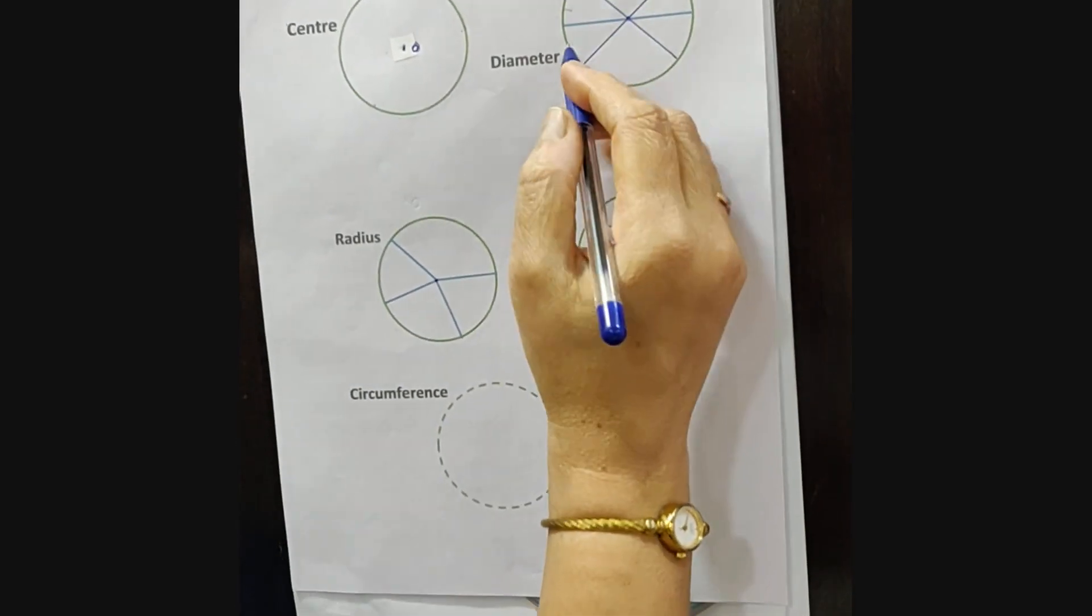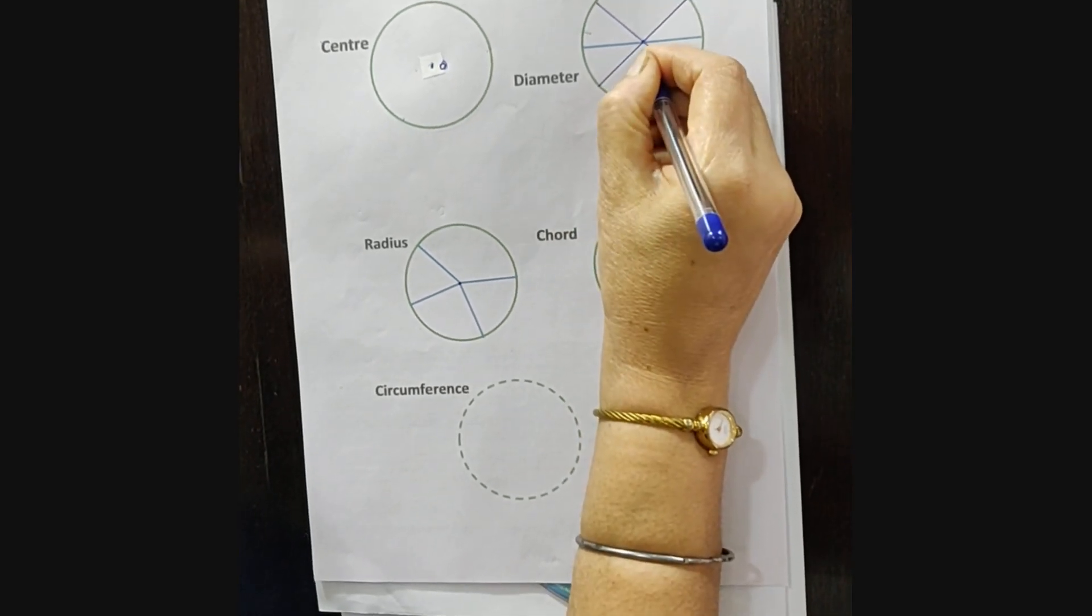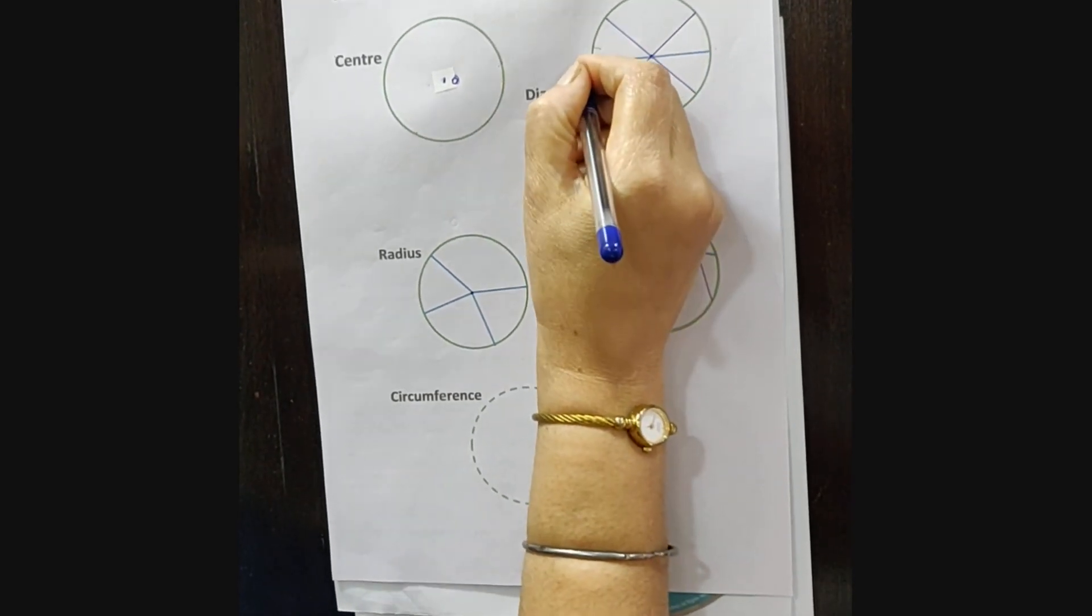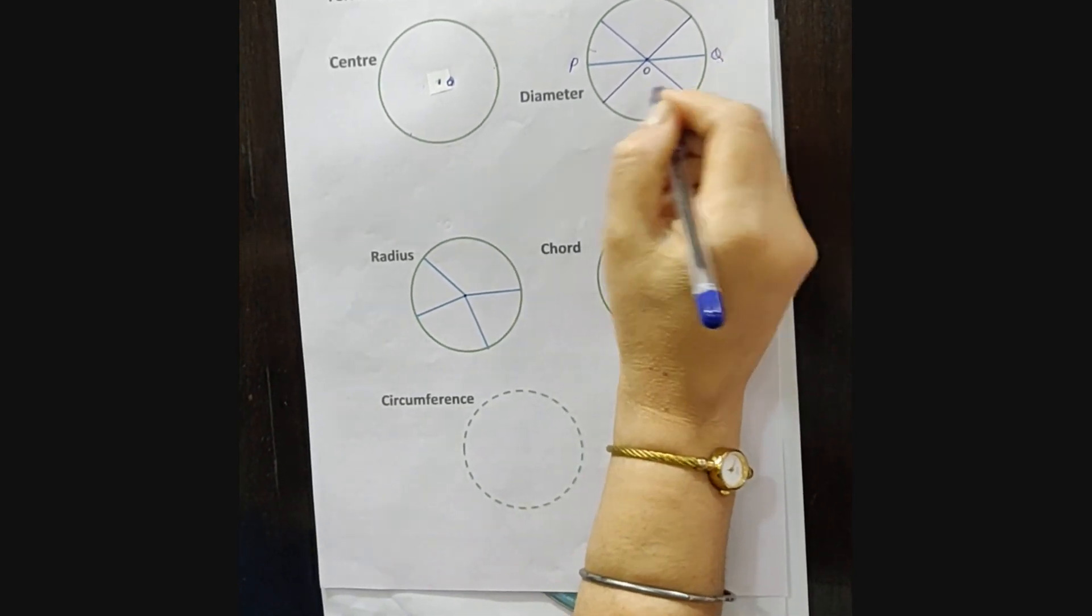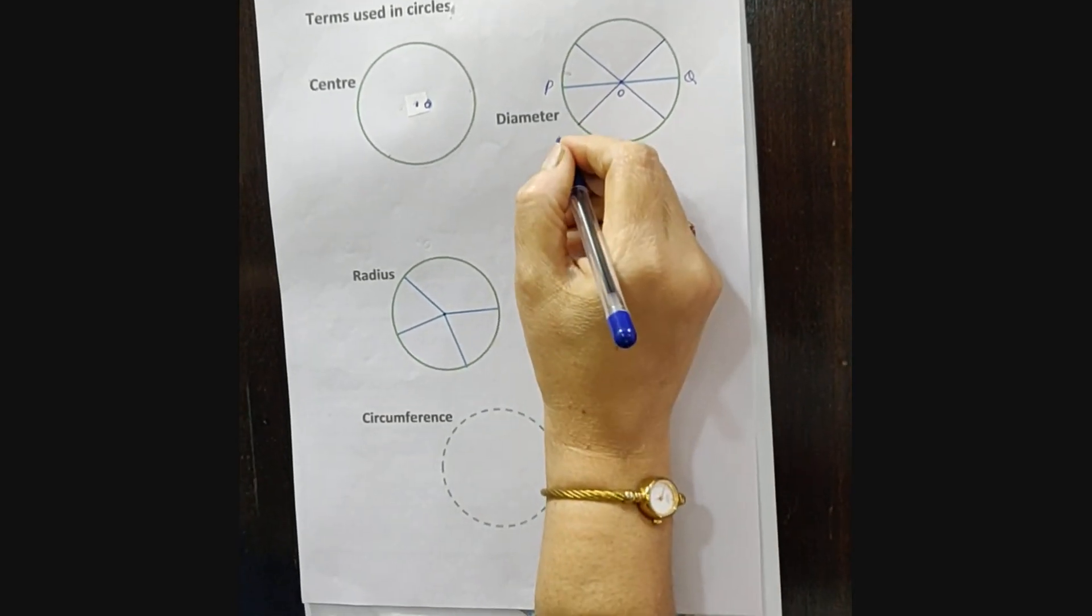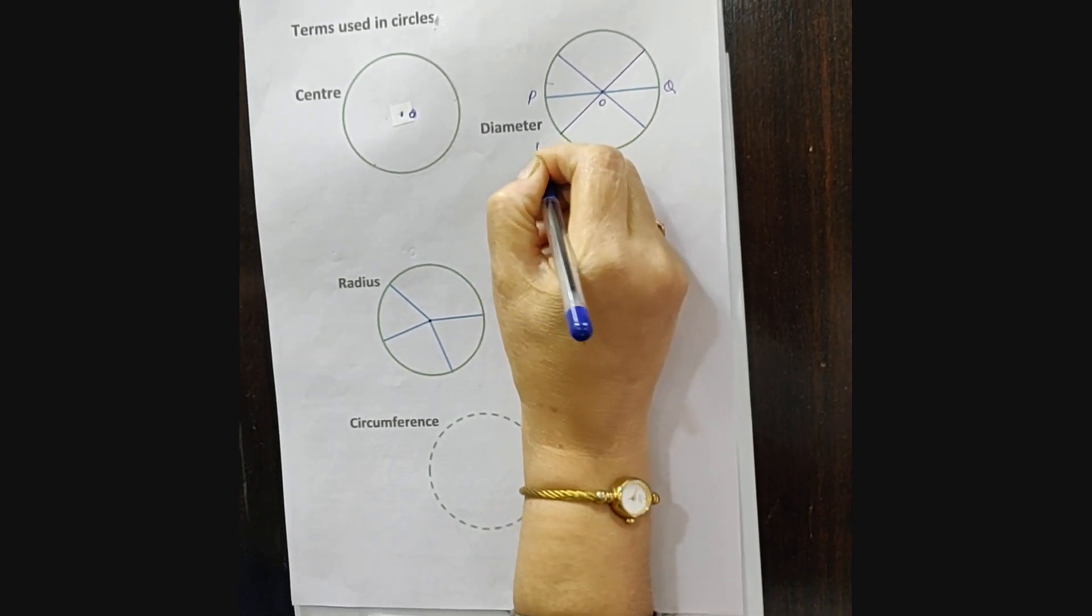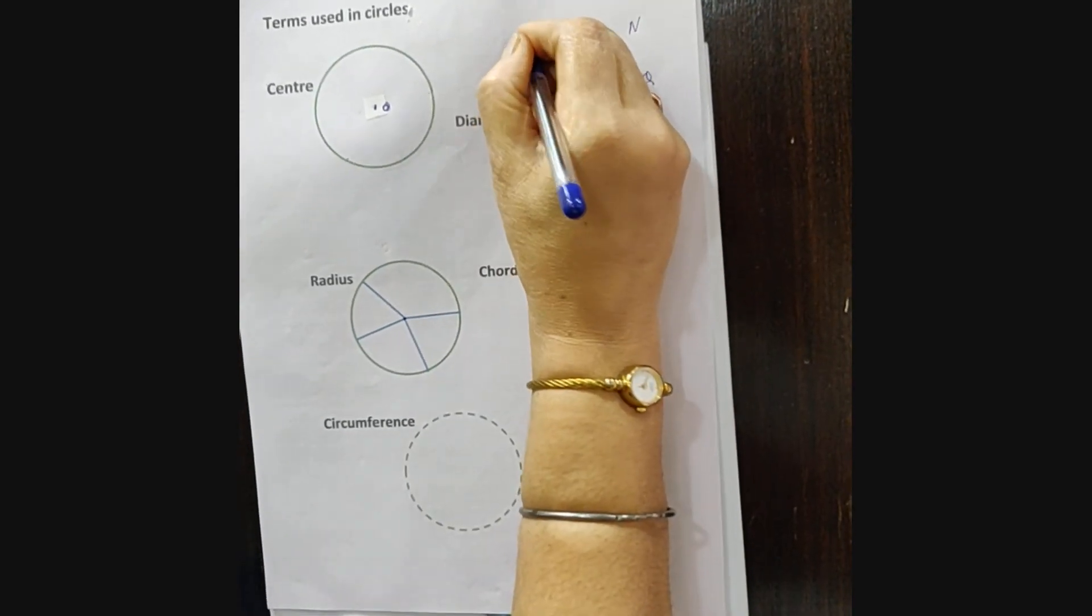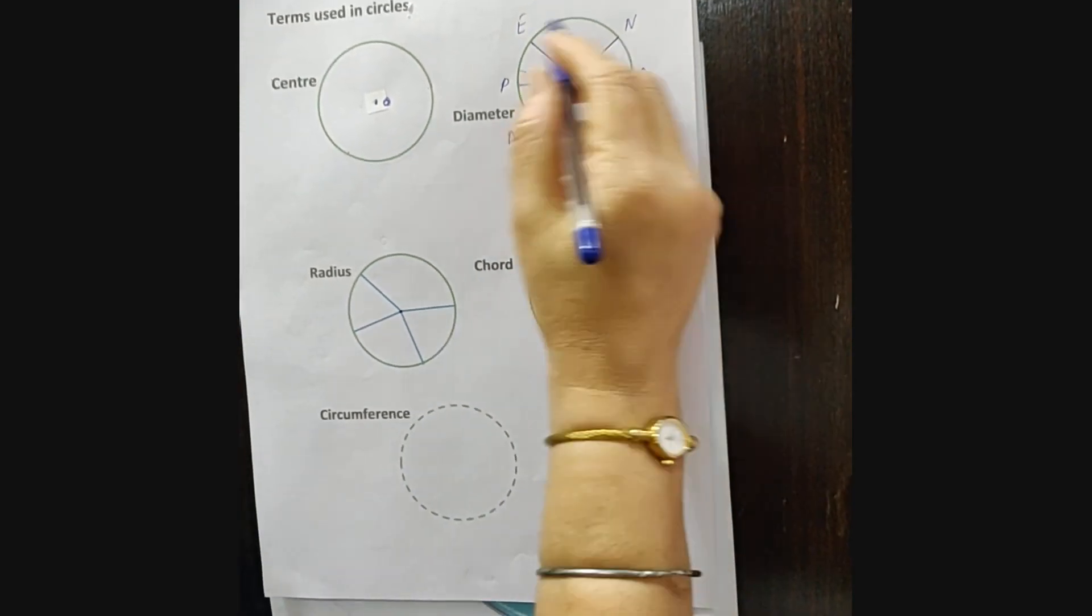Now we are coming to the diameter. When we draw a line segment passing through the center of the circle to the other part, it is known as diameter. Here P and Q are the diameter of the circle. We can draw infinite diameters on the circle. Suppose it is M and N and E and F.